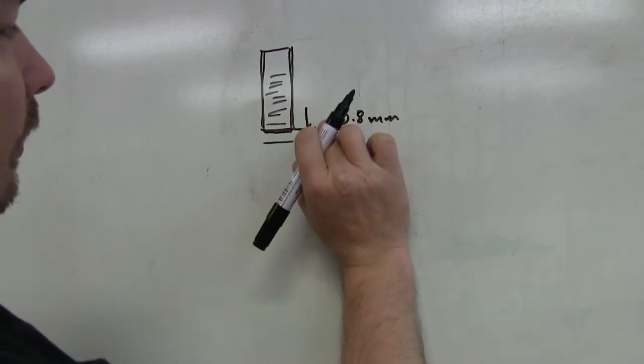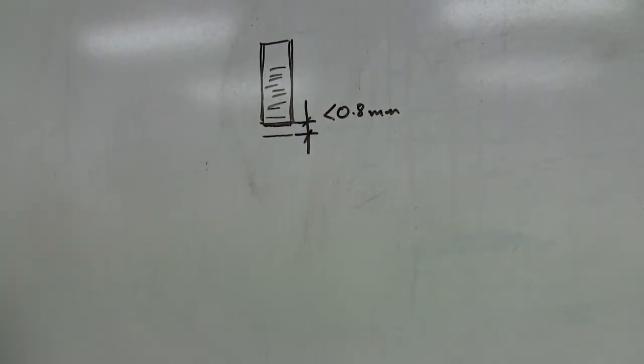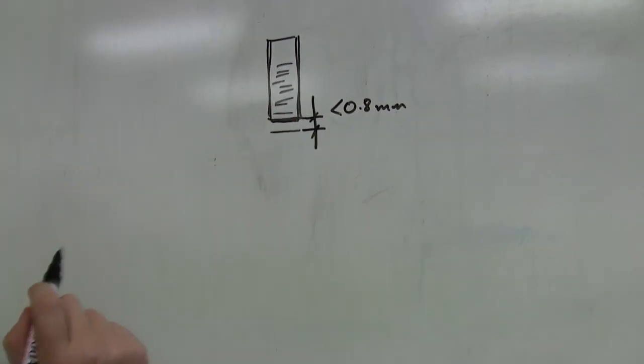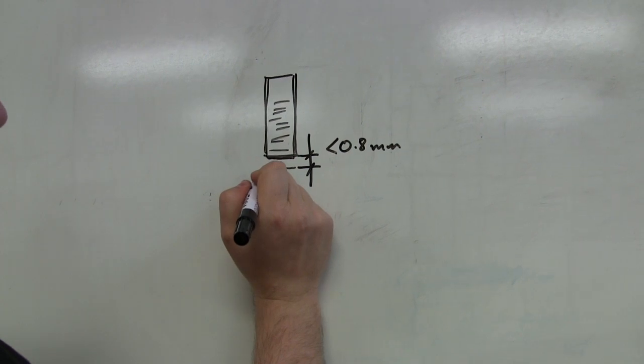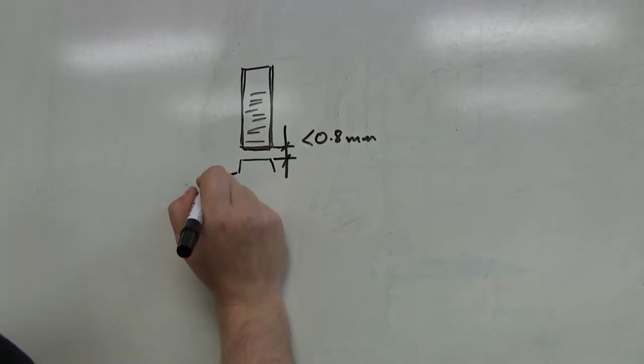The gap between the sensor and the surface it's measuring should be 0.8 of a mil or less. Now, we've set this up in the next room, and we'll see that in a second. Now, ideally, what you usually use it for is to measure gear teeth.